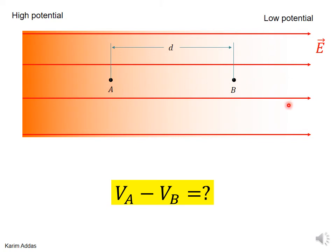We derived before in detail what is VA minus VB, what's the difference in potential between two points in space. We showed that the difference in potential is basically the electric field times the distance.